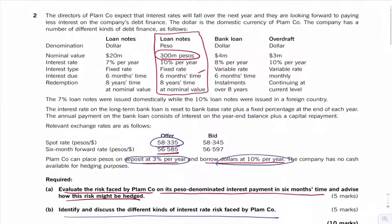Okay, and then it says identify and discuss the different interest rate risks. So let's just have a look at this. What other things they've got, they've got this fixed rate loan, they've got a variable rate loan as well.